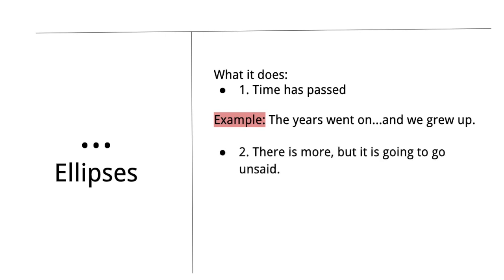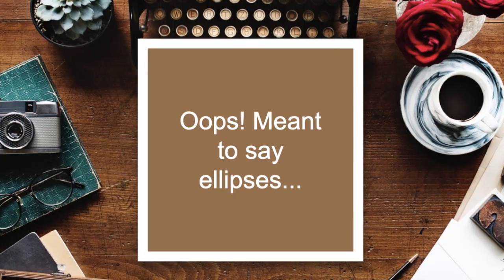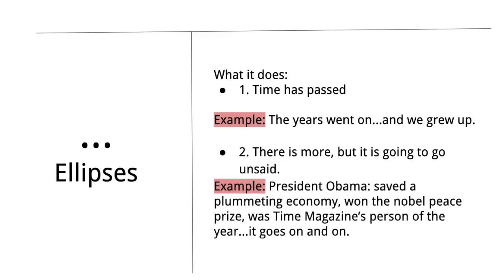Number two is the ellipsis indicates that there is more, but it's going to go unsaid. For example: 'President Obama saved a plummeting economy, won a Nobel Peace Prize, was Time Magazine's Person of the Year...' — it goes on and on. Those ellipses indicate that there are more things that President Obama accomplished in his time in office, but we're just not going to sit here and list them all.